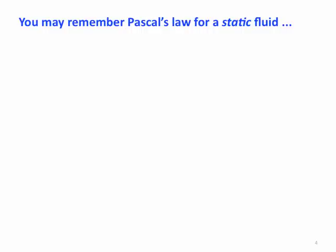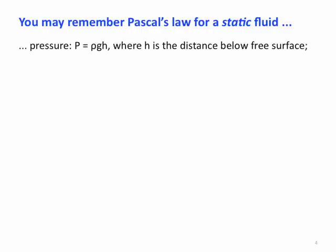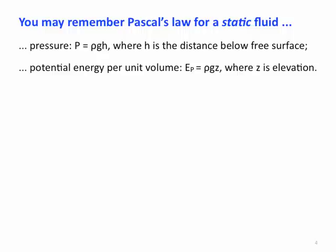Now you may remember from your fluid mechanics class Pascal's Law, which was derived for a static fluid, and here we can use it as a hydrostatic fluid for one that's moving. Our pressure in the fluid is rho g h, where h is the distance below the free surface. The potential energy per unit volume is given by rho g z, where z is the elevation.